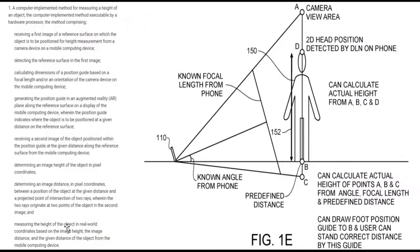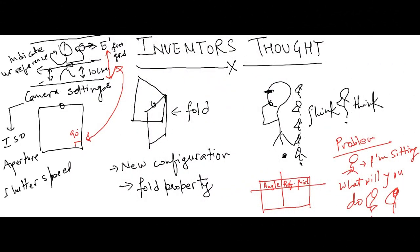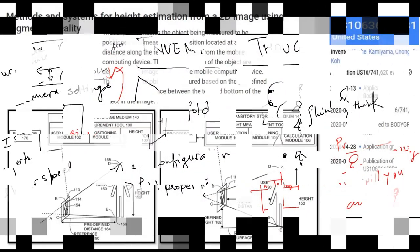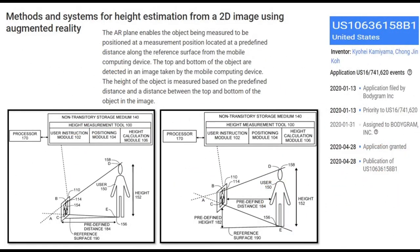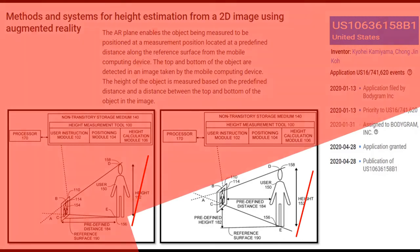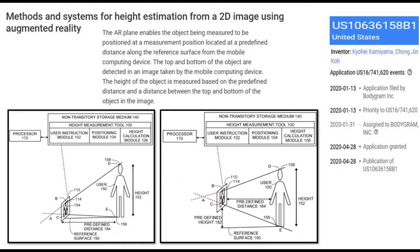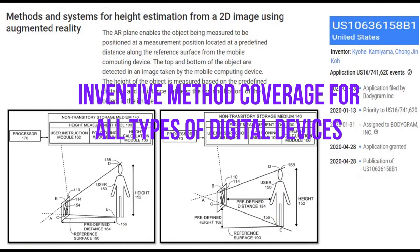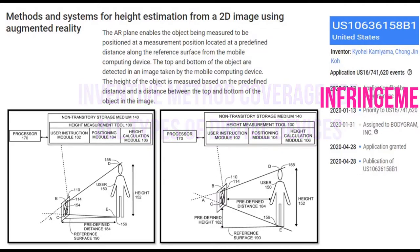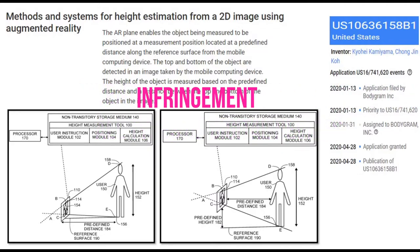Please comment if you find a new use case. Coming to the existing invention, which is a software patent backed up with inventive elements. It intends to find the height of an object using a mobile phone application. When the patent is a software one, its usability covers all types of digital devices, so merely changing the digital device will not result in another patent.